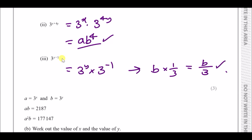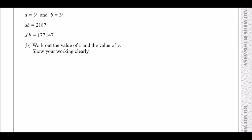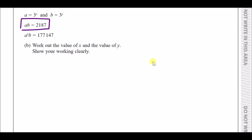Now they give us the same info again: a times b equals 2187 and a squared times b equals another result. We need to find the values of x and y. This looks like simultaneous equations. A quick tip: work out the values of a and b first before finding x and y.